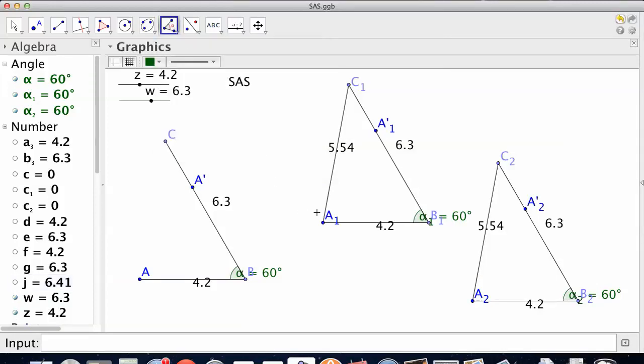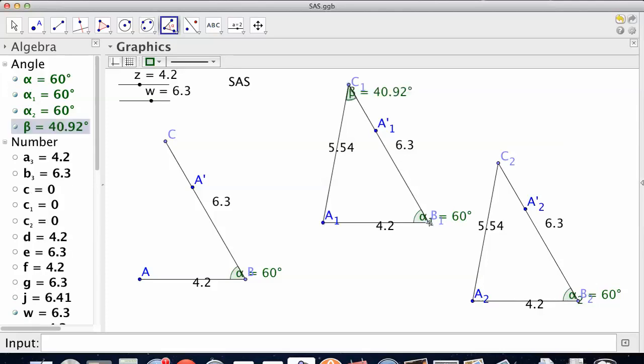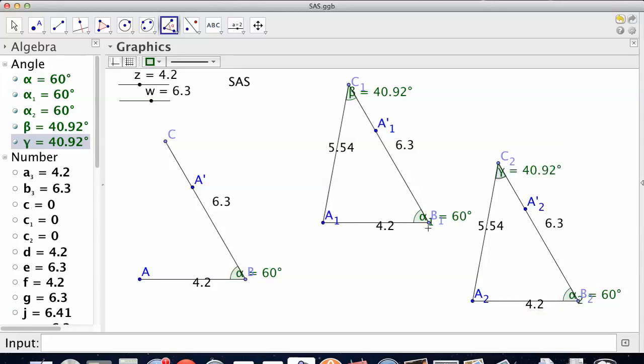Are those angles the same? Are all six parts the same? 40.92. What are you thinking? 40.92. If we know two angles, don't we know the third one? Yeah, but we'll just do it here for some people.